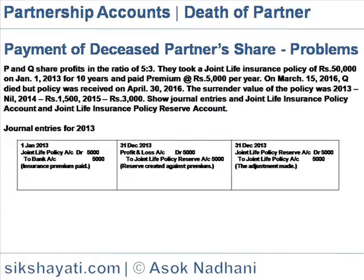Payment of deceased partner's share. P and Q share profits in the ratio of 5 is to 3. They took a joint life insurance policy of 50,000 on January 2013, for 10 years, and paid premium at the rate of 5,000 per year. On March 15, 2016, Q died, but the policy was received on 30 April 2016. The surrender value of the policy was: 2013 — 0, 2014 — 1,500, 2015 — 3,000. We need to prepare journal entries, joint life policy account, and joint life policy reserve account.